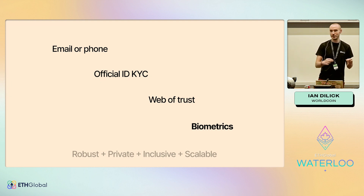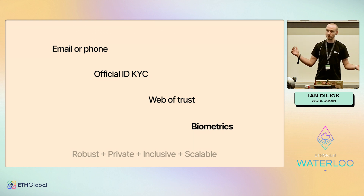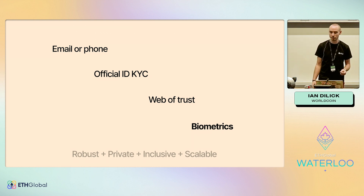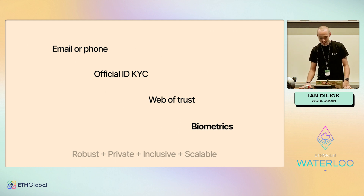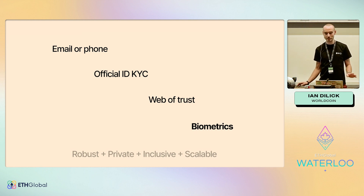When you're dealing with trying to sign up the entire global population and your initial trusted set is 64, you get really far away from that trusted set and it becomes a very gameable system. That leaves us with biometrics, which initially sounds scary, but we can do it in a privacy-preserving way.